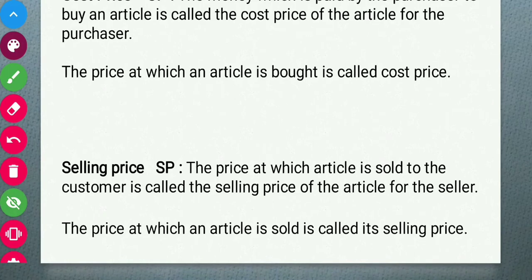Next is selling price. As the name itself suggests, it is the price at which the article is sold to the customer. The shopkeeper is going to sell that article for whatever amount is there, so the price at which an article is sold is called the selling price — abbreviated as SP.